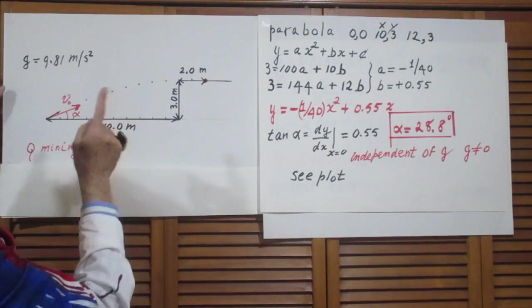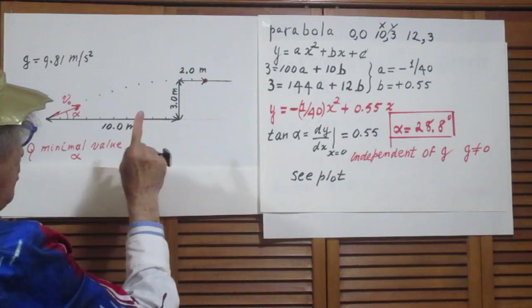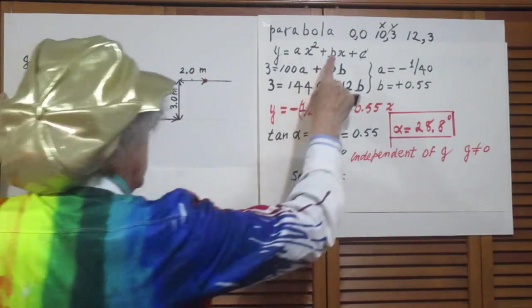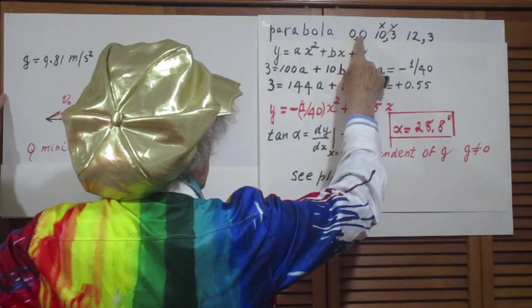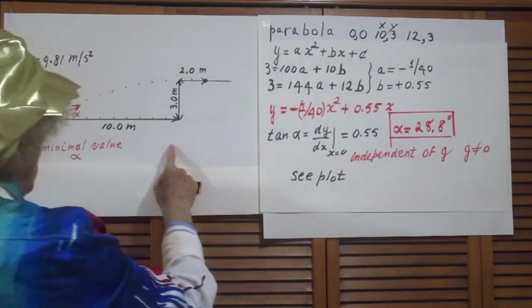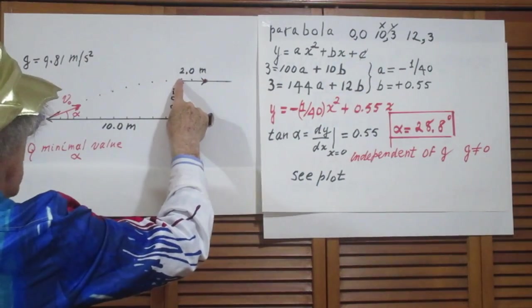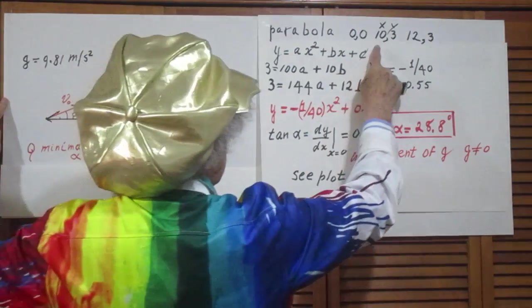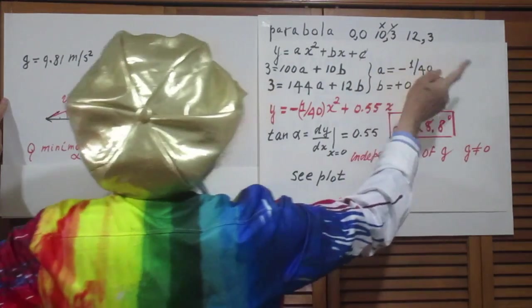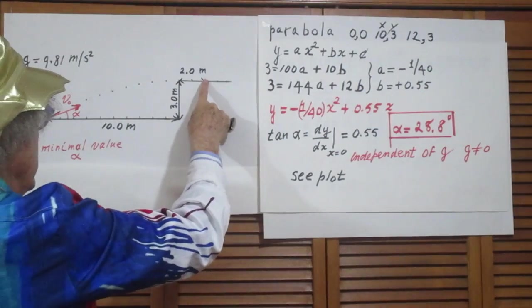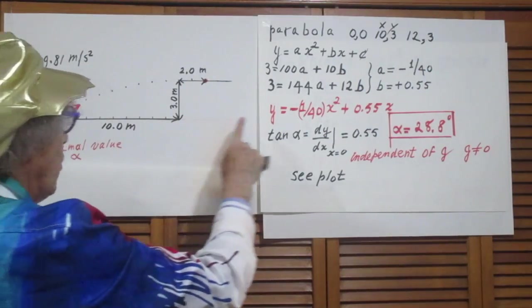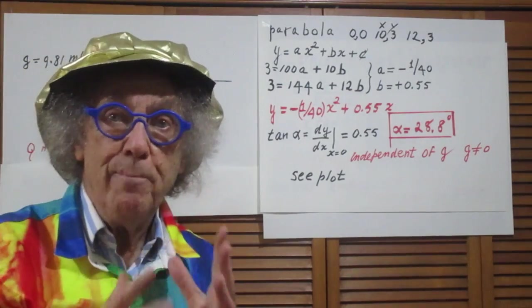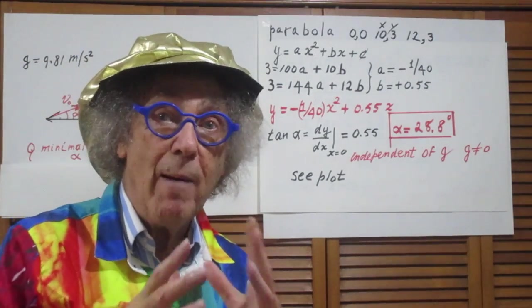That parabola has three known points: this point which is x equals zero, y equals zero; this point which it must clear, x equals 10, y equals 3; and this point here, x equals 12 and y equals 3. Those three points must lie on that parabola.